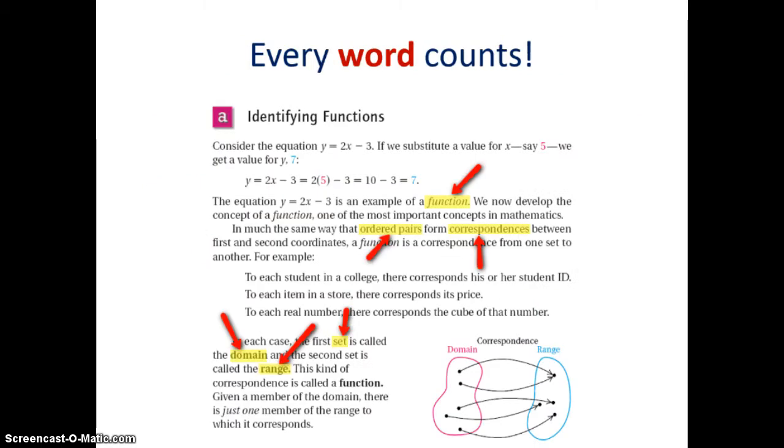Math textbooks contain more concepts per word, per sentence, and per paragraph than any other text type or content area textbook, as cited in Rust 2008. Learning mathematics is a cumulative process, meaning that new concepts and skills are built from previous ones. For such reasons, math textbooks avoid repeating information.